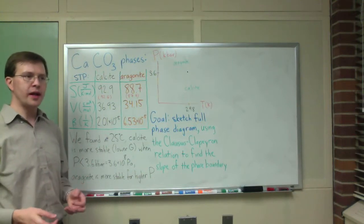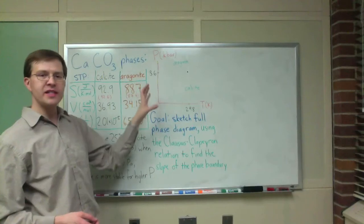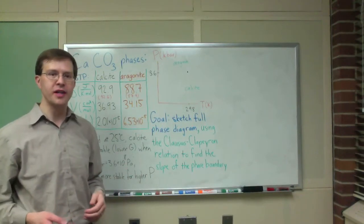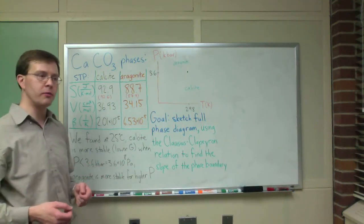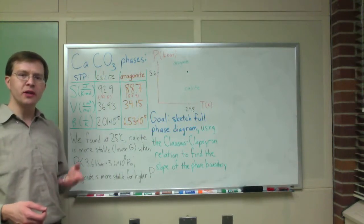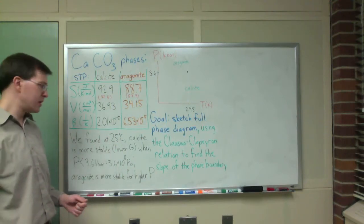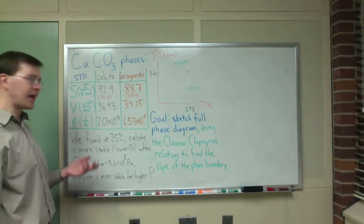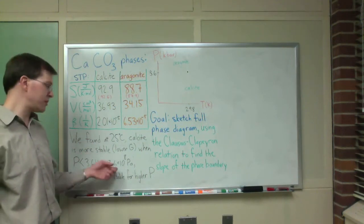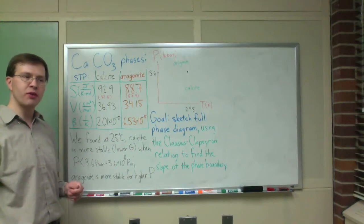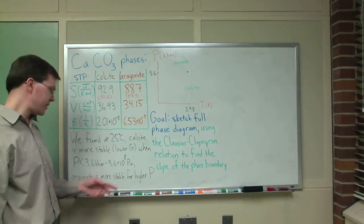What I'd like to do right now is figure out how we can use this knowledge to actually sketch a full phase diagram, or at least portions of a phase diagram, for this system where we have two different solid phases of calcium carbonate. The starting point is a result from class: at 25 degrees Celsius at standard temperature and pressure, calcite is more stable. But as we increase the pressure, once we go up to 3.6 kilobars — 3.6 times 10 to the 8 pascals — at that point aragonite becomes the more stable phase.